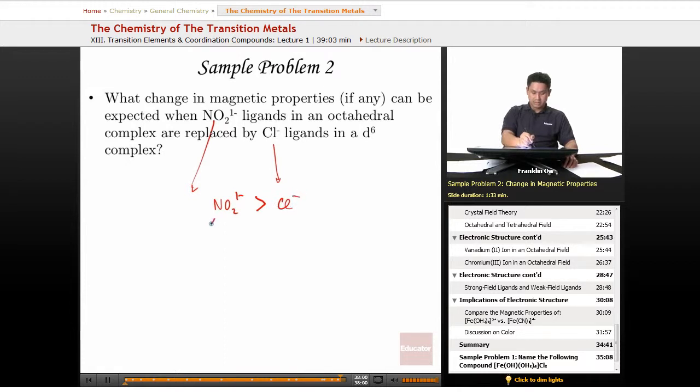This is going to give us a larger delta_o, and this is going to give us the smaller delta_o. Remember, large delta_o means it's going to be low spin, and small delta_o means it's going to be high spin.